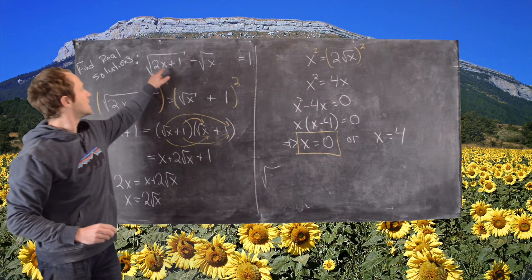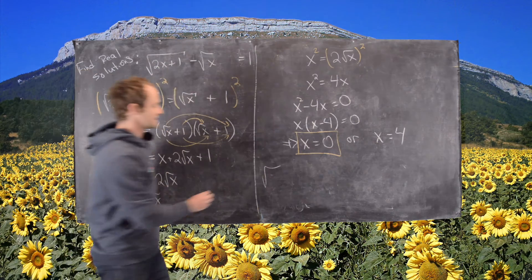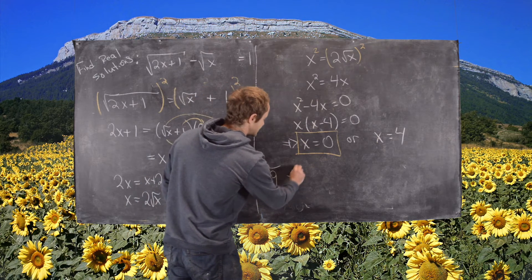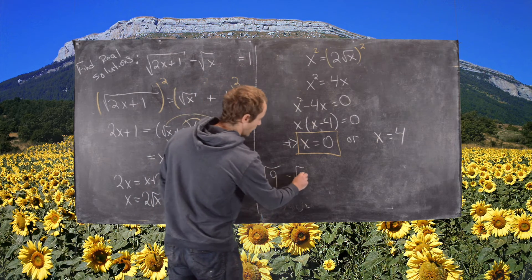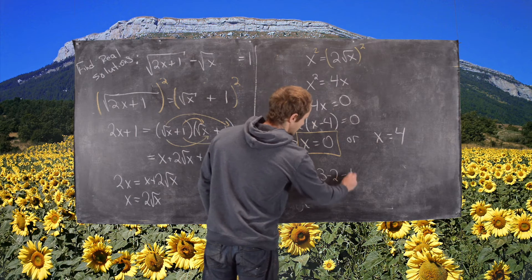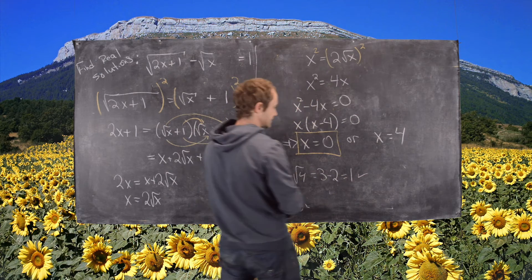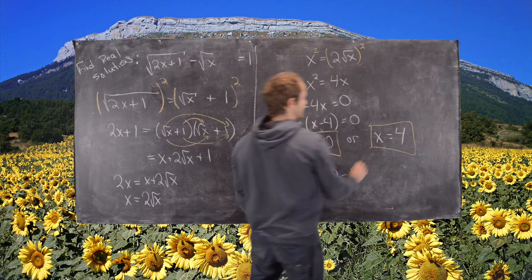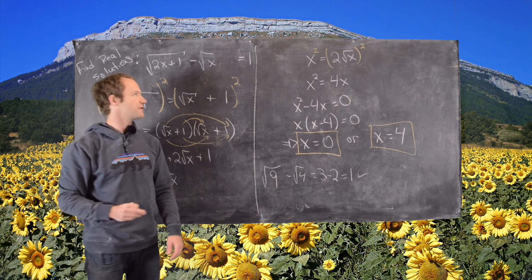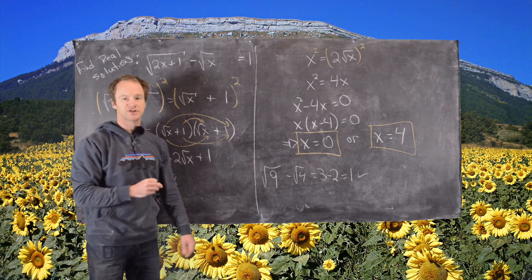If I plug 4 into the original equation, I get the square root of 8 plus 1, which is 9, minus the square root of 4. So I get 3 minus 2, which is 1. That also satisfies the original equation. So in this case we get to keep both solutions. These are all real solutions to this radical equation.